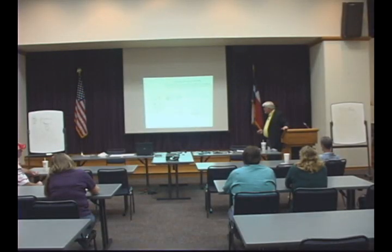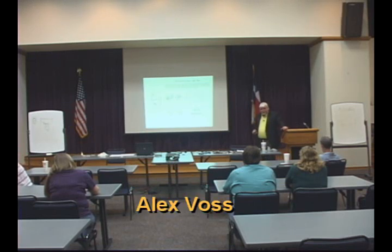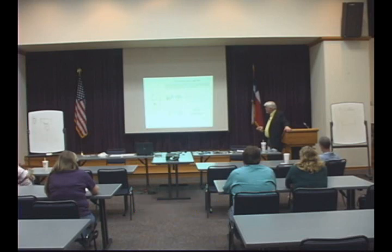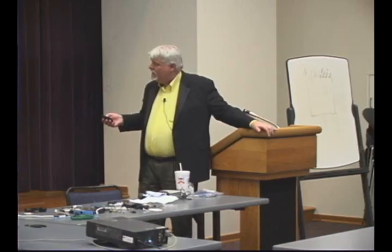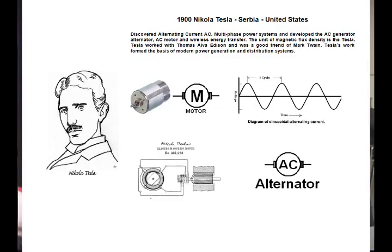Let's go on to Tesla. Tesla is probably one of the more fascinating ones. He was very prolific. He was born in Serbia, then moved to the United States. He discovered alternating current and multi-phase power systems. He developed the AC generator, the alternator, the AC motor. He even came up with wireless energy transfer and radio.